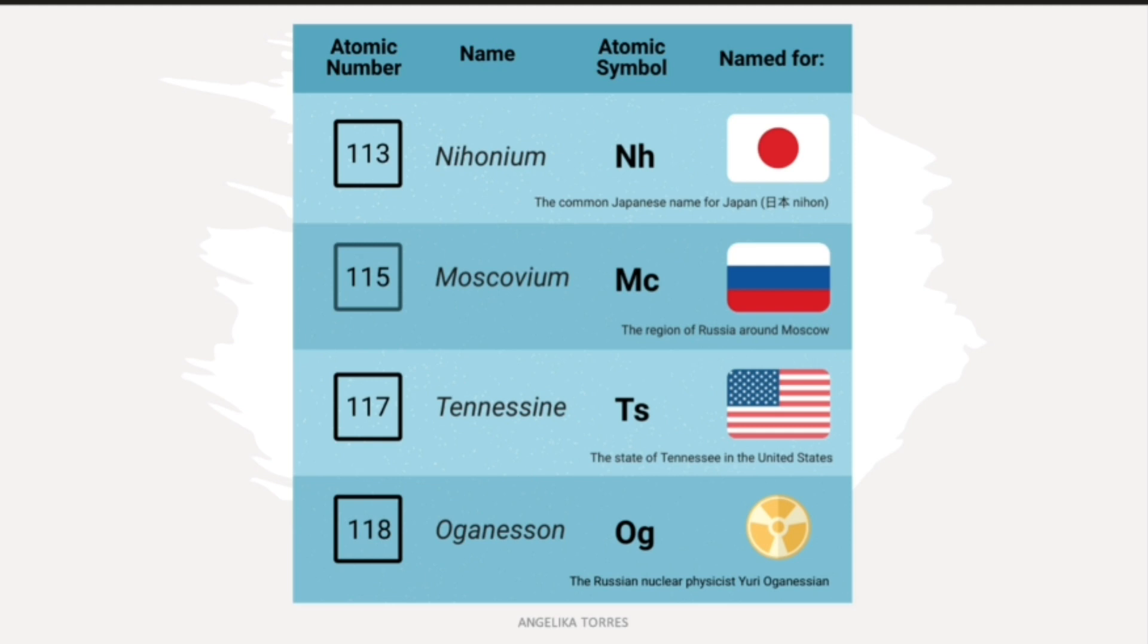In 2016, four new elements were added to the Periodic Table. That means the seventh period of the Periodic Table is complete. Those four elements are numbered 113, 115, 117, and 118.